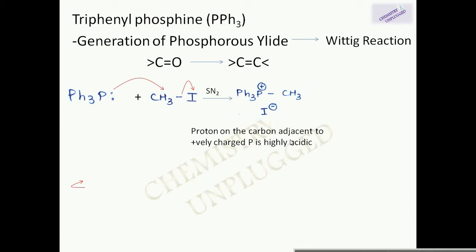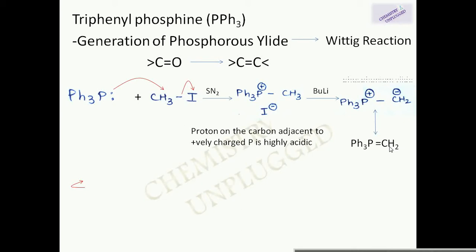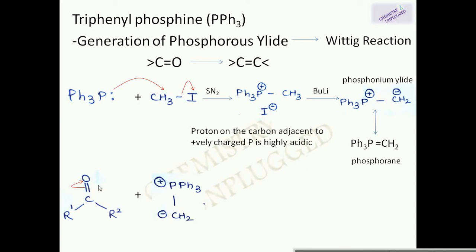Now we have a positive charge on phosphorus. The proton on the carbon adjacent to positively charged phosphorus is highly acidic in nature. We can remove this hydrogen using a strong base like butyllithium. When we remove one of the hydrogens from the methyl group, it converts to CH2⁻. When we have a positive charge on phosphorus and a negative charge on the adjacent carbon, it is known as a ylide or phosphonium ylide, written as Ph₃P=CH₂, and then we call it a phosphorane.